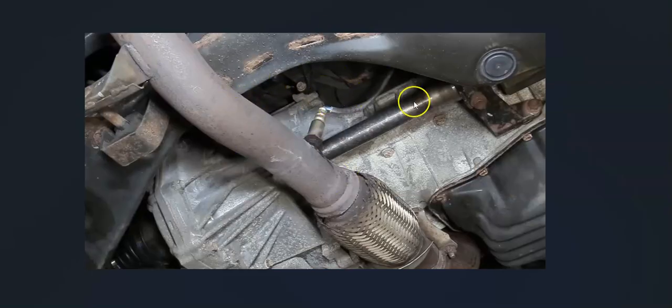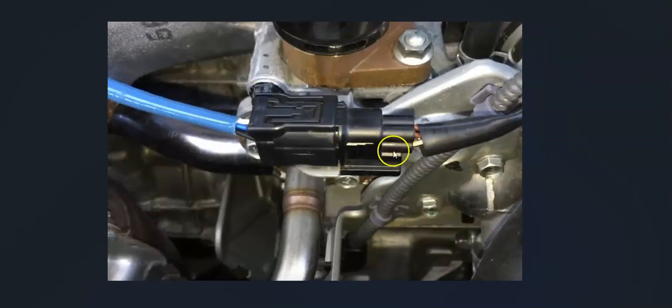Once you locate the bank 2 sensor 2 oxygen sensor, the next thing to do is check out this wiring, be sure that it all looks good, that there's no issues going on or anything like that. Basically keep in mind anything bad with the wiring, open, short, bad connection, is going to cause the same symptoms as a bad sensor. So you just want to take a look at that, be sure that looks good.